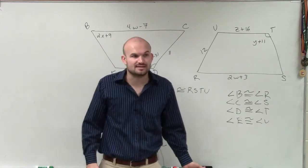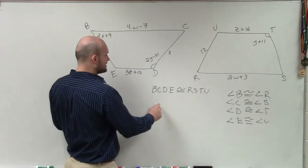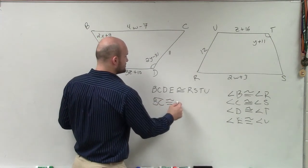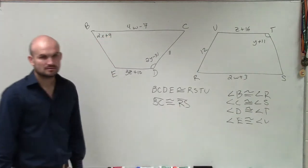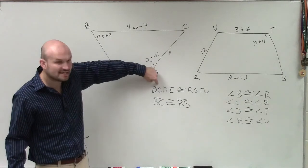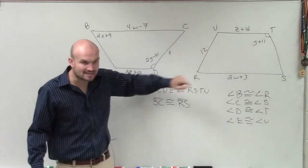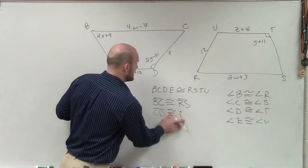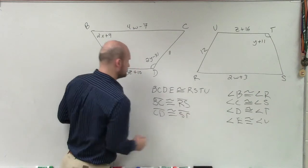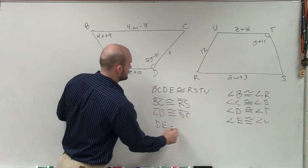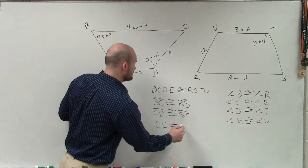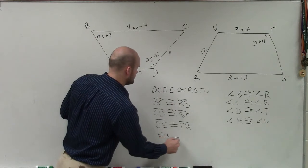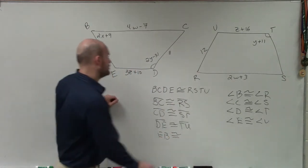Now what about the side lengths? You can do the same thing. By looking at these side lengths, I can say that side BC is congruent to side RS. Because the first thing I do is B to C. Then over here I do R to S. Then I can say C to D is congruent to S to T. Then go to D to E is congruent to T to U. And then I can go to E to B is congruent to U to R.